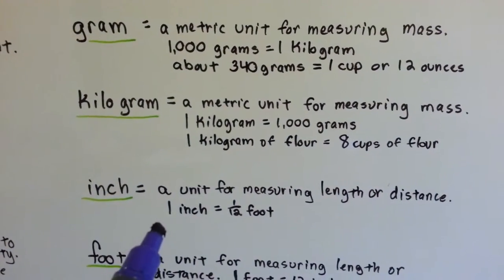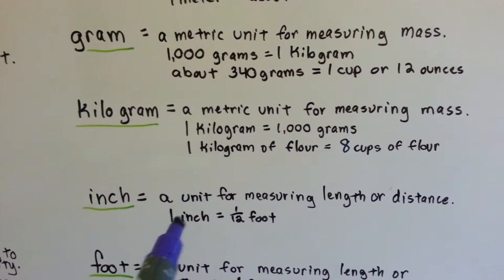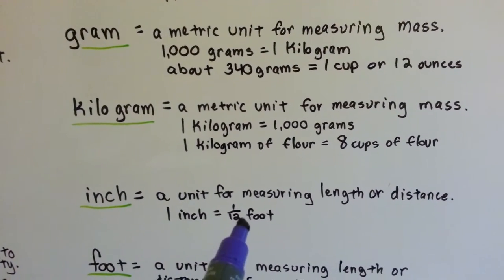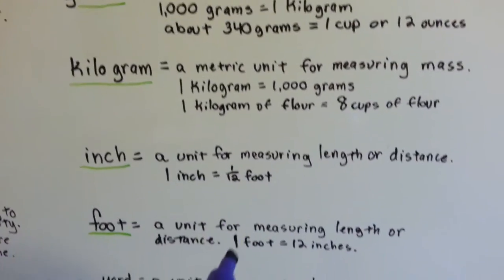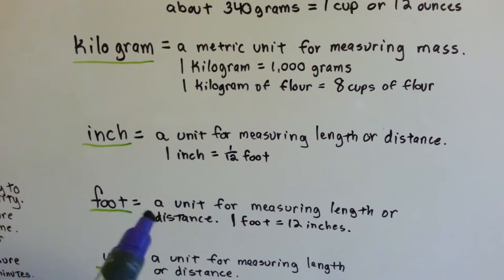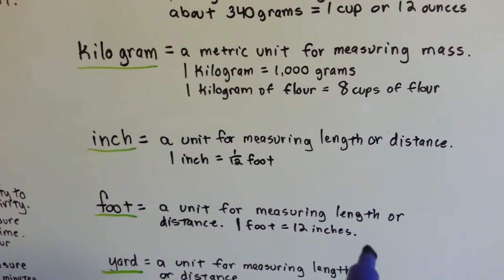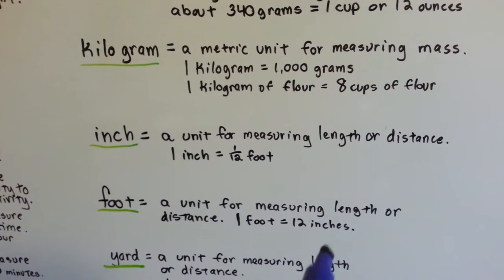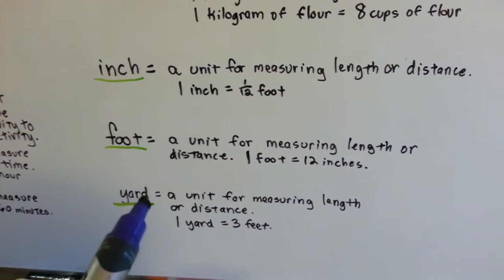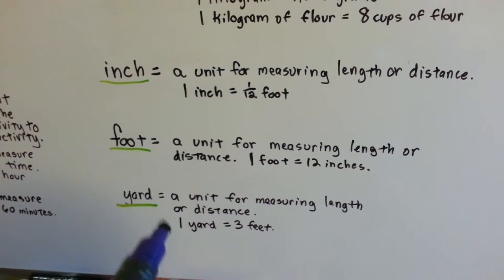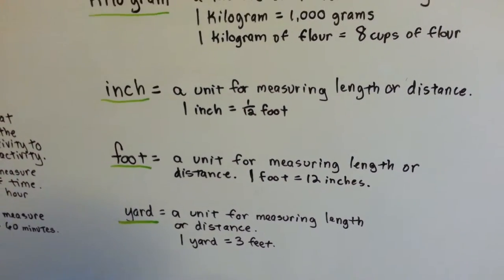An inch is a unit for measuring length or distance. One inch is one twelfth of a foot. There's 12 inches in one foot. A foot is another unit for measuring length or distance. And like I said, one foot is 12 inches. A yard is a unit for measuring length also or distance. And one yard is 3 feet.